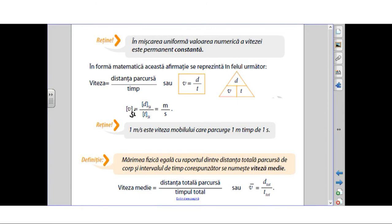The physical quantity of speed, which equals the distance traveled divided by time. The unit of speed is meter per second. One meter per second is the speed of a mobile that travels 1 meter in 1 second.